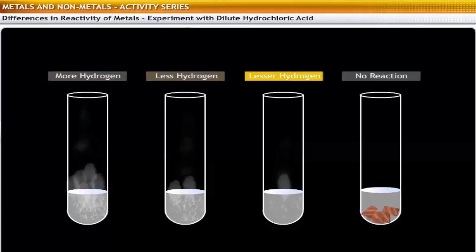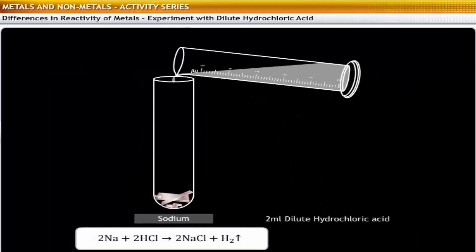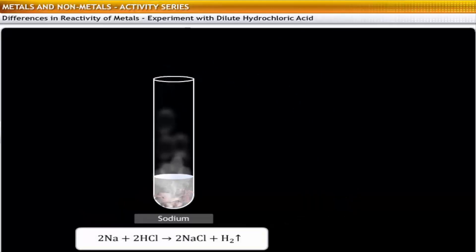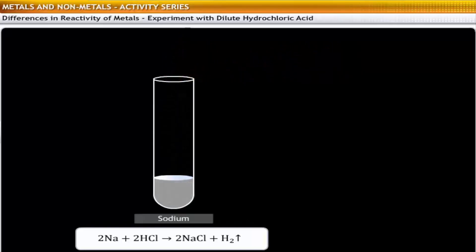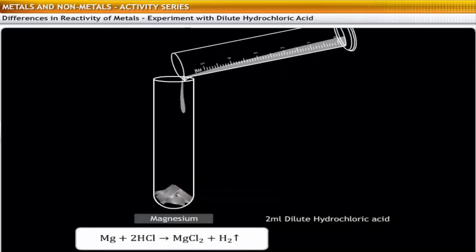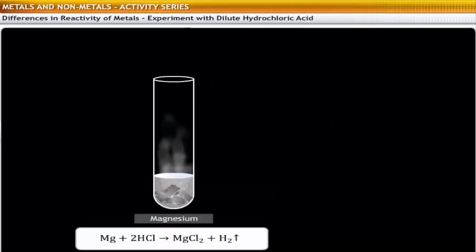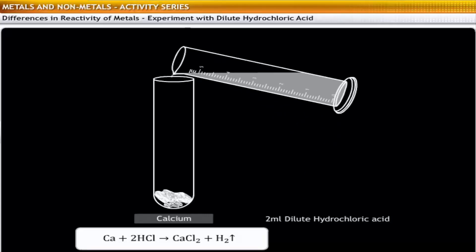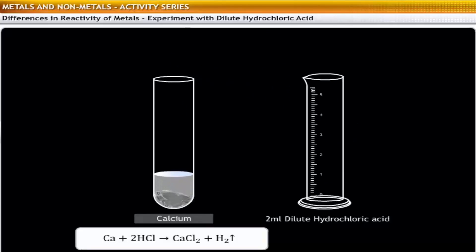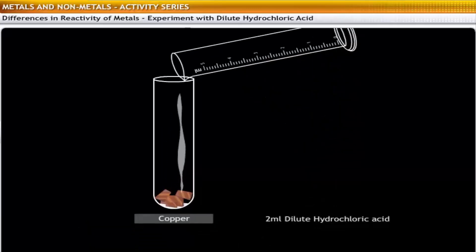However, you will notice that the rate at which the gas is liberated in each test tube is different. For instance, adding 2 ml of dilute hydrochloric acid to sodium results in a vigorous liberation of hydrogen gas. If you hold a burning splinter over the mouth of the test tube, the flame is extinguished with a pop sound. Similarly, the addition of dilute hydrochloric acid to magnesium liberates hydrogen, but the rate is lower than that observed with sodium. The rate reduces further with calcium, while copper does not react with hydrochloric acid at all.